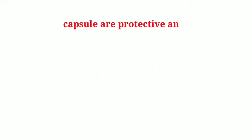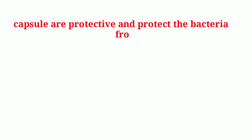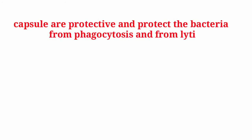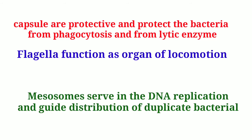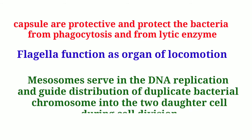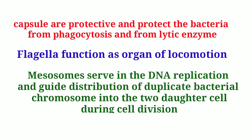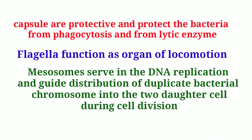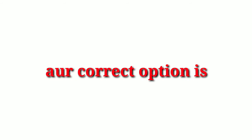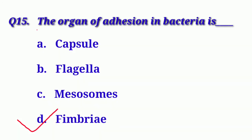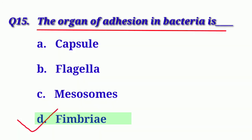Flagella function as organs of locomotion. Mesosomes serve in DNA replication and guide distribution of duplicate bacterial chromosomes into two daughter cells during cell division. Fimbriae function as organs of adhesion. So our correct option is Option D: Fimbriae. The organ of adhesion in bacteria is fimbriae.